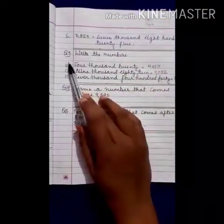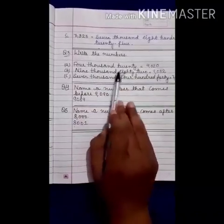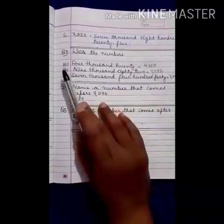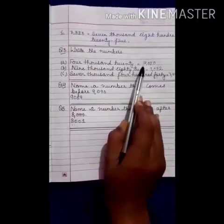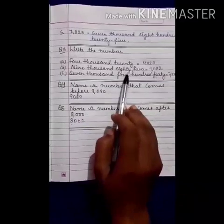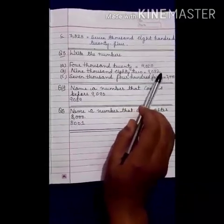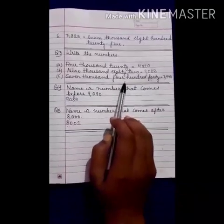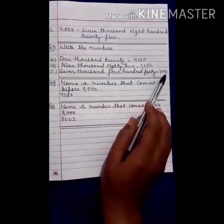Now third question: write the numbers. Here they have given you the names and you have to write the numbers. A is four thousand and twenty — 4020. B is nine thousand and eighty-two — 9082. C is seven thousand four hundred and forty — 7440.